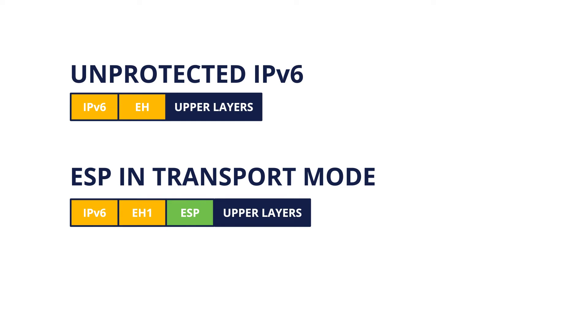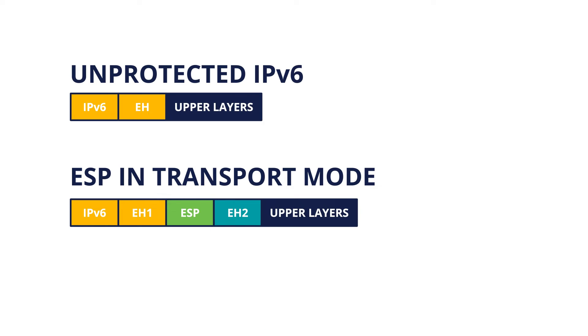Other extension headers that are supposed to be inspected only at the packet's destination can go after the ESP header, like the Destination Options header, shown as EH2, in the figure.